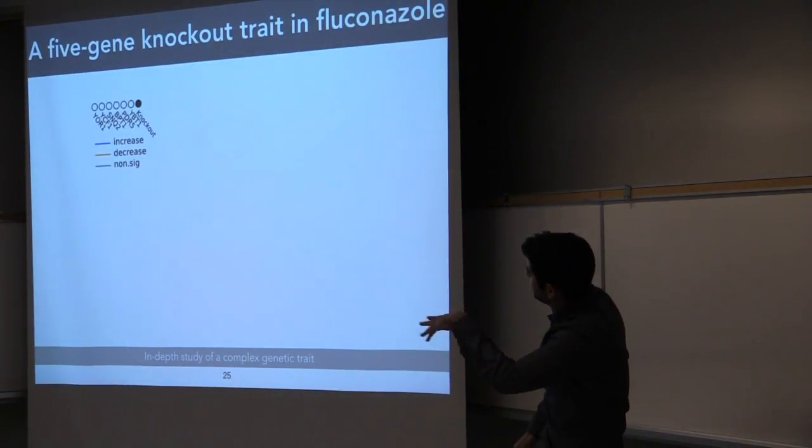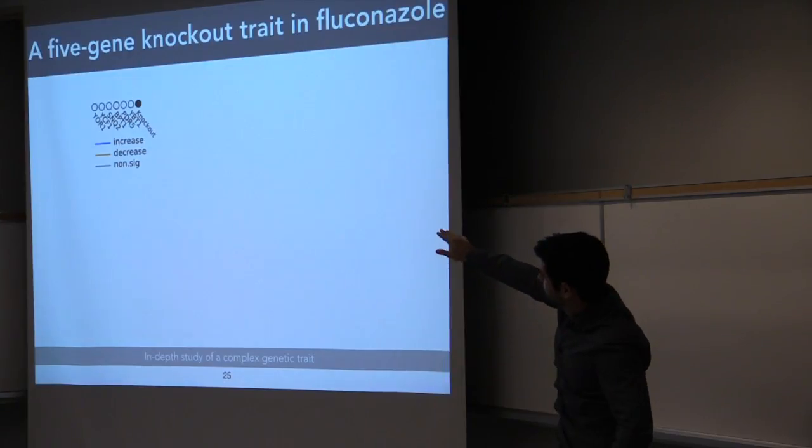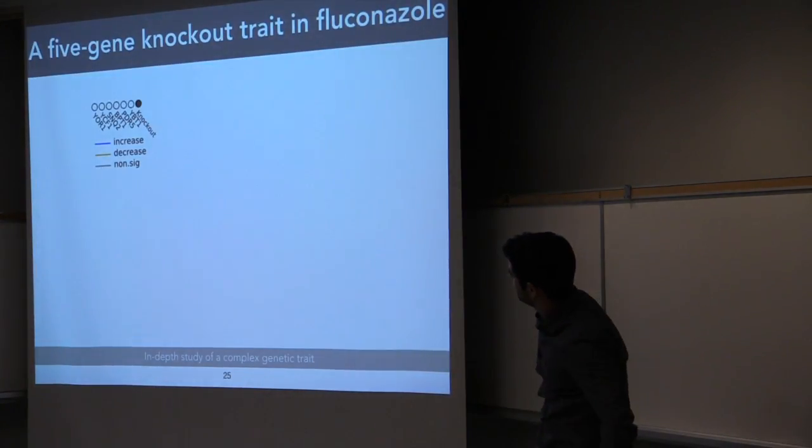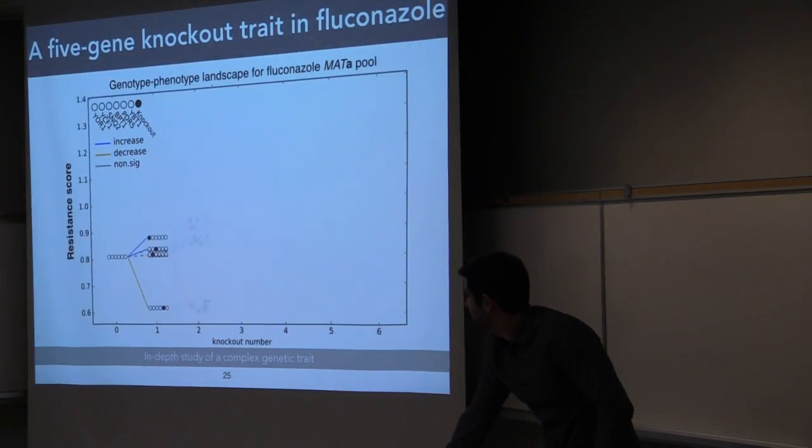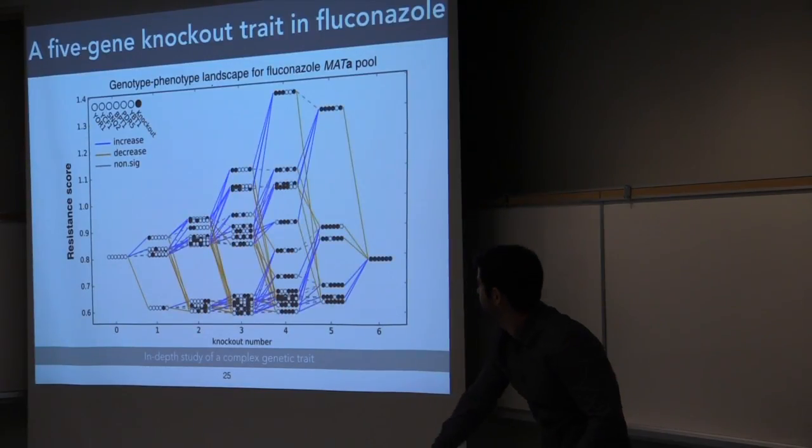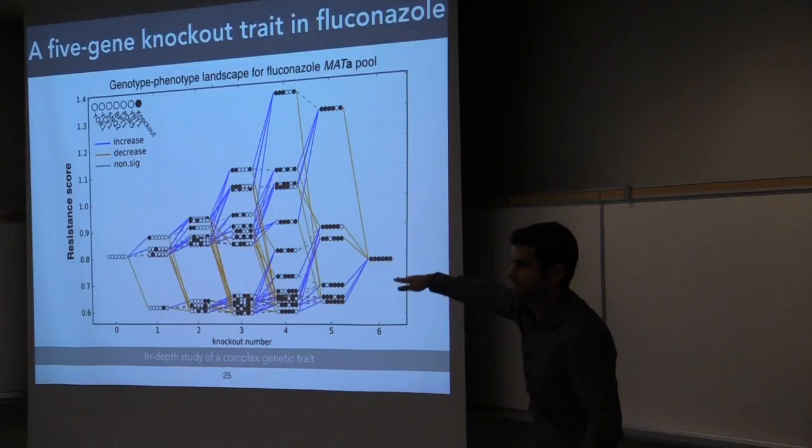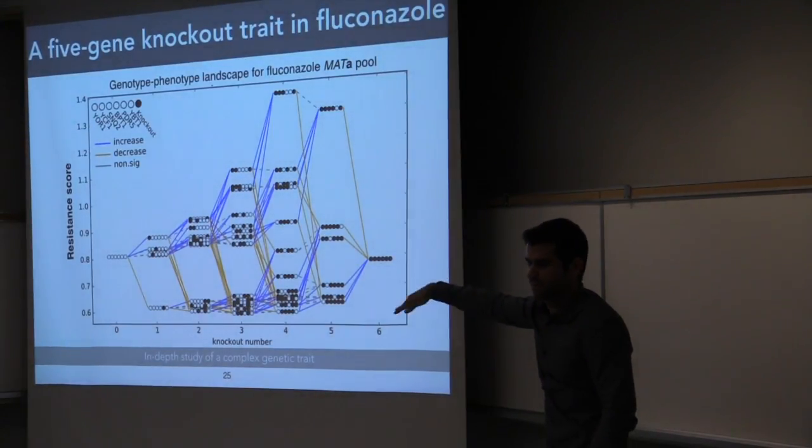Another way I did it is to make this sort of classic fitness landscape. So here I've just encoded the genotype with these six dots. And if it's colored in black, it means the knockout. So again, the single knockouts have slightly more resistant phenotypes. But then if you zoom into the four genes, there's a dramatic effect. And then any PDR5 knockout is just near the bottom there.